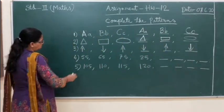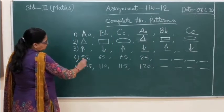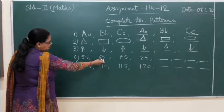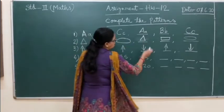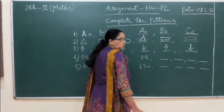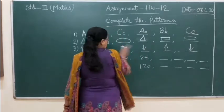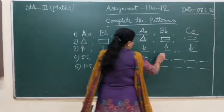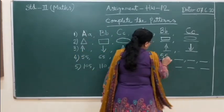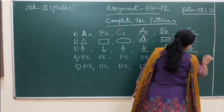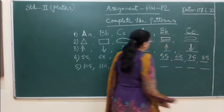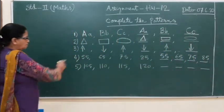See here: 55, add 10: 65, 10 more: 75, 10 more: 85, 10 more: 95. You will follow the same pattern. So: 55, then 65, then 75, then 85. This way you will follow the same pattern here.